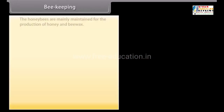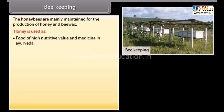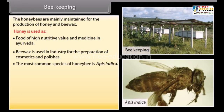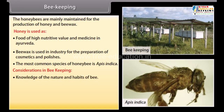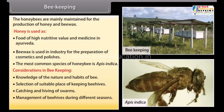Beekeeping: Honey bees are mainly maintained for the production of honey and beeswax. Honey is used as food of high nutritive value and in Ayurvedic medicine. Beeswax is used in industry for cosmetics and polishes. The most common species is Apis indica. Key considerations include knowledge of bee nature and habits, selection of suitable beehive locations, catching and hiving of swarms, management of beehives during different seasons, and handling and collection of honey and beeswax.